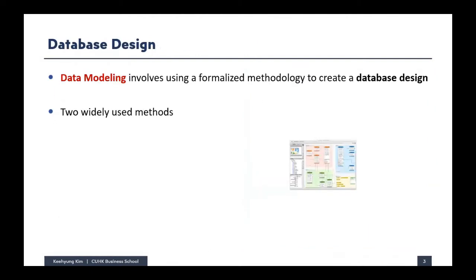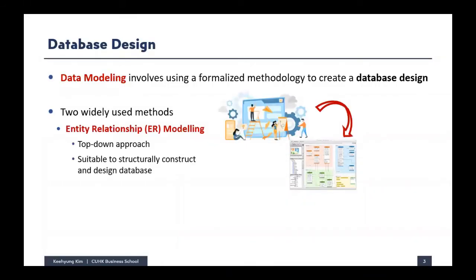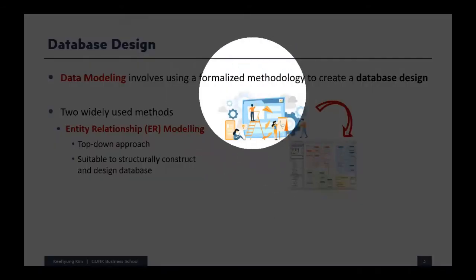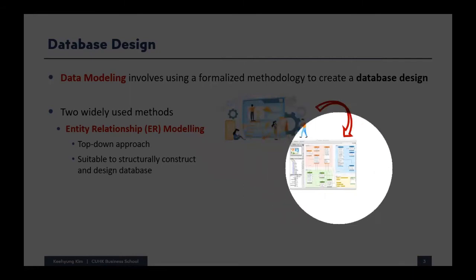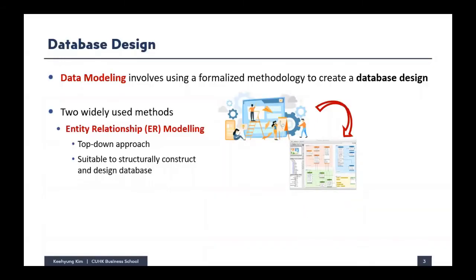Will there be a sophisticated way to model this kind of relationship before we actually implement a database system? That's what we call entity relationship modeling. We are going to do entity relationship modeling to design the database. Data modeling involves using a formalized methodology to create a database design. In relational databases, there are two widely used methods. The first approach is entity relationship modeling, which is a top-down approach — based on a business event, we design the database system.